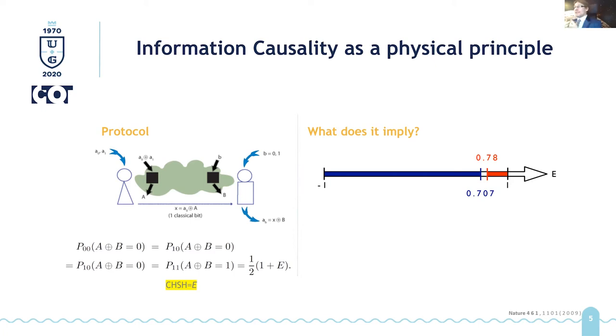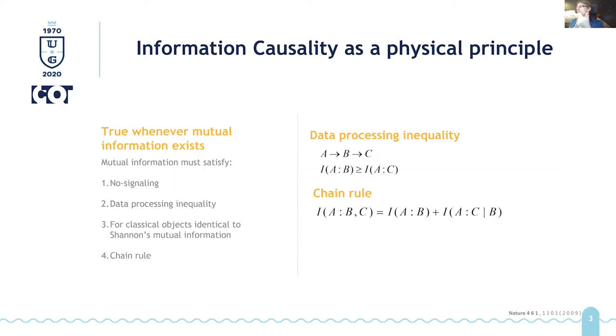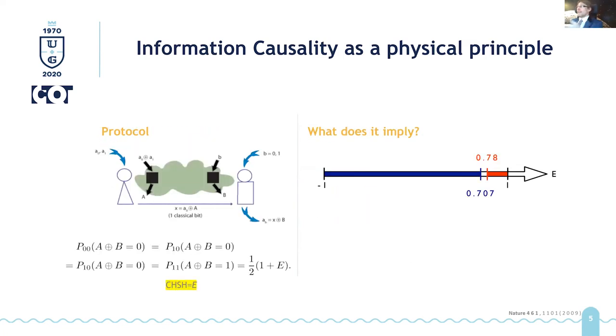But the amazing thing is that obviously, if Bob were successful every time in guessing one of Alice's numbers, then in this formula that I have here, both mutual informations would be one, and since we are sending only one classical bit, this inequality would be violated. This means that PR boxes do not satisfy information causality, and since I'm trying to convince you that this is a reasonable principle, they should not exist.